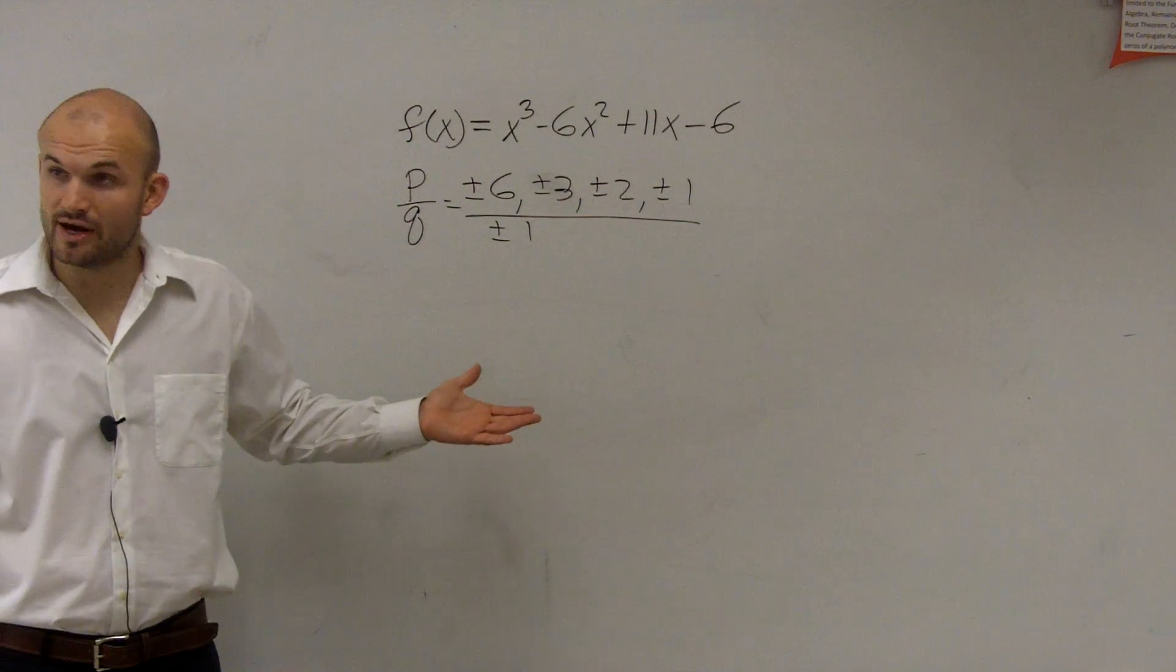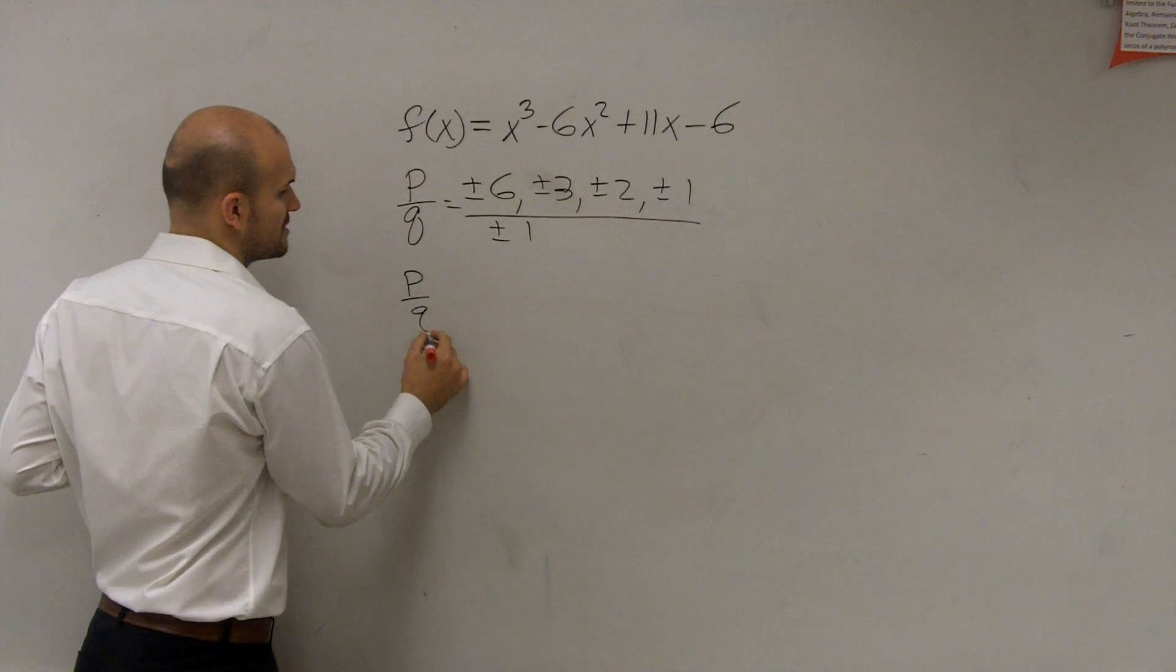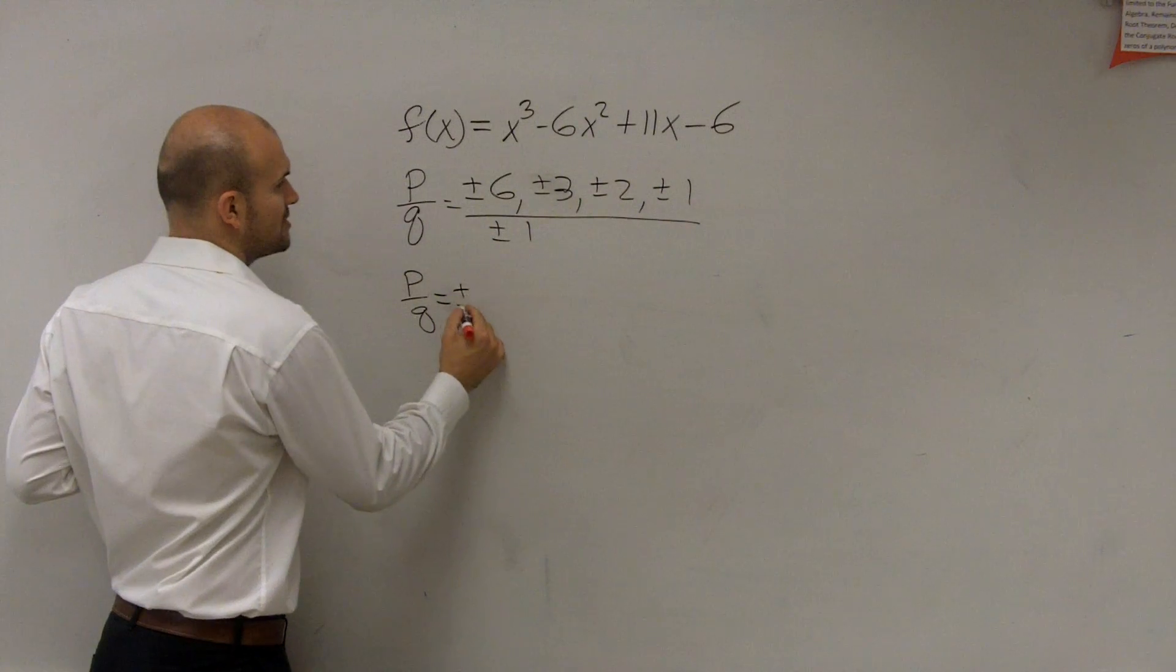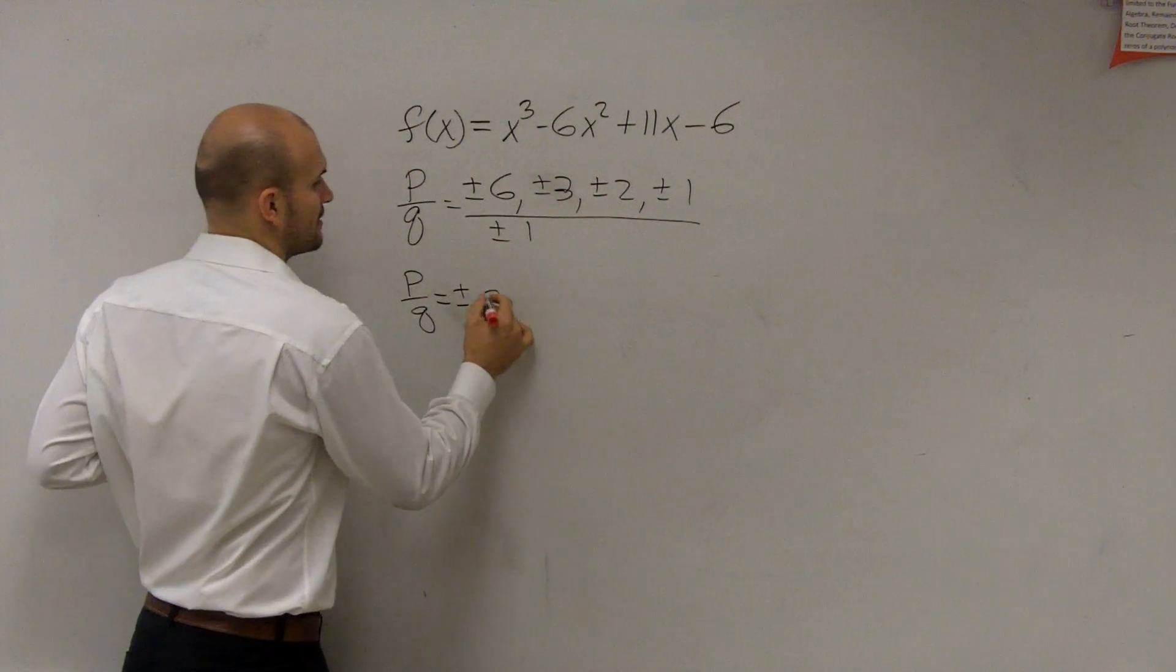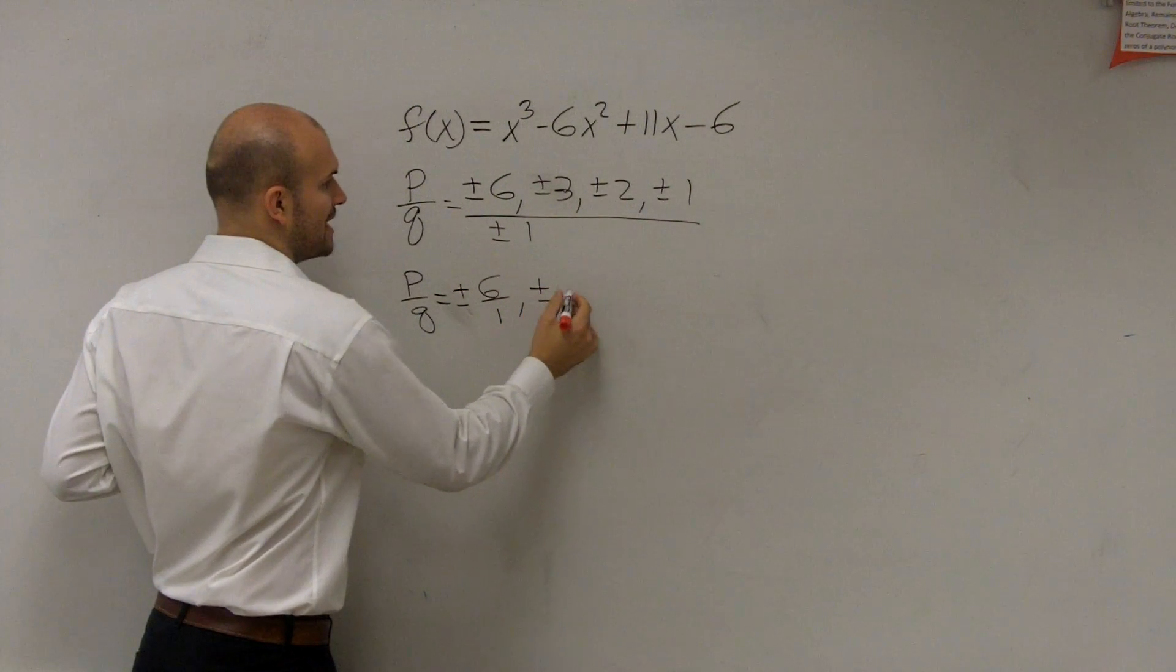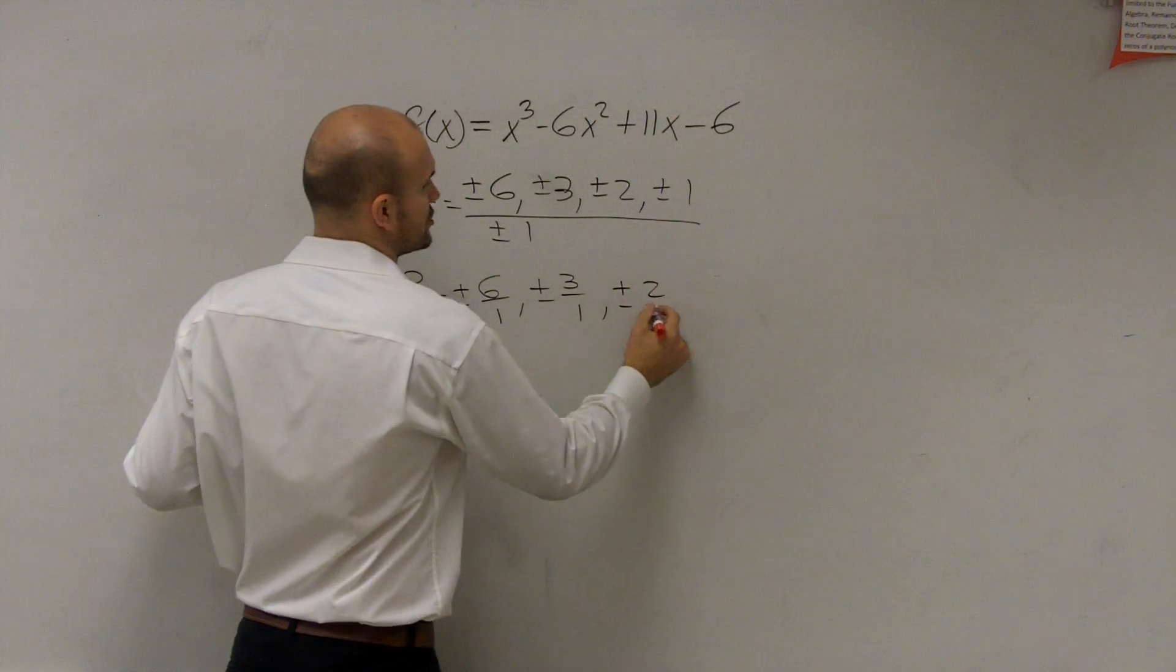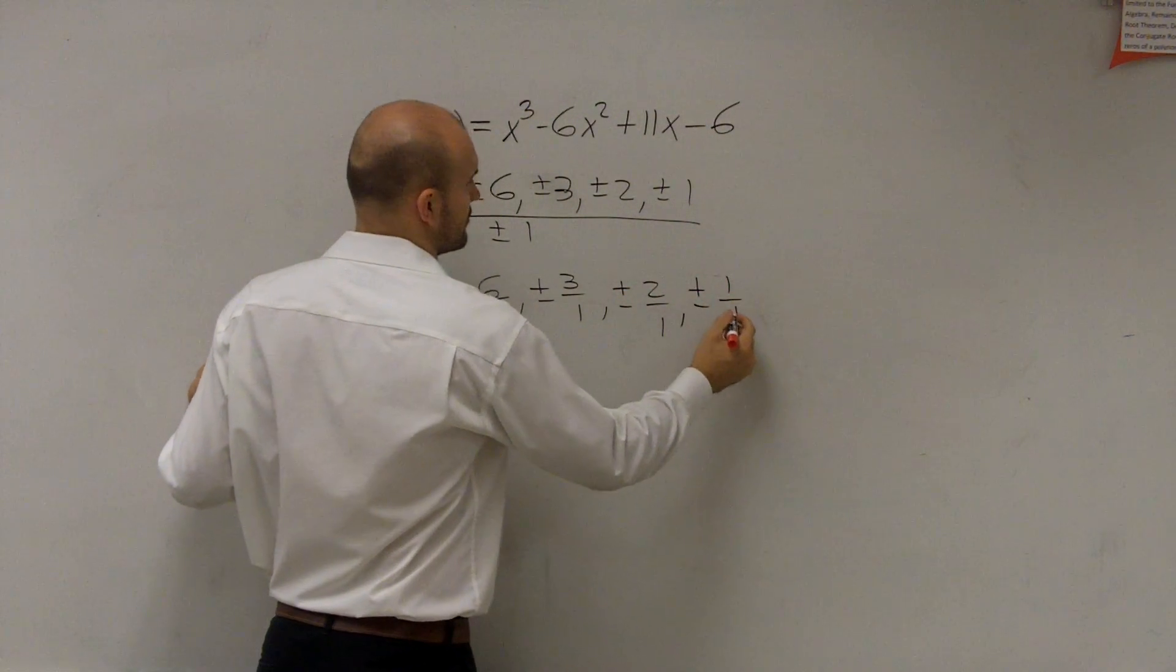So all you have to do for every single question, first of all, is just write out all the possible combinations. So p over q is going to equal plus or minus, I'm just going to write out all the possibilities so you guys can see what it looks like, and then we'll simplify. 6 over 1, plus or minus 3 over 1, plus or minus 2 over 1, plus or minus 1 over 1.